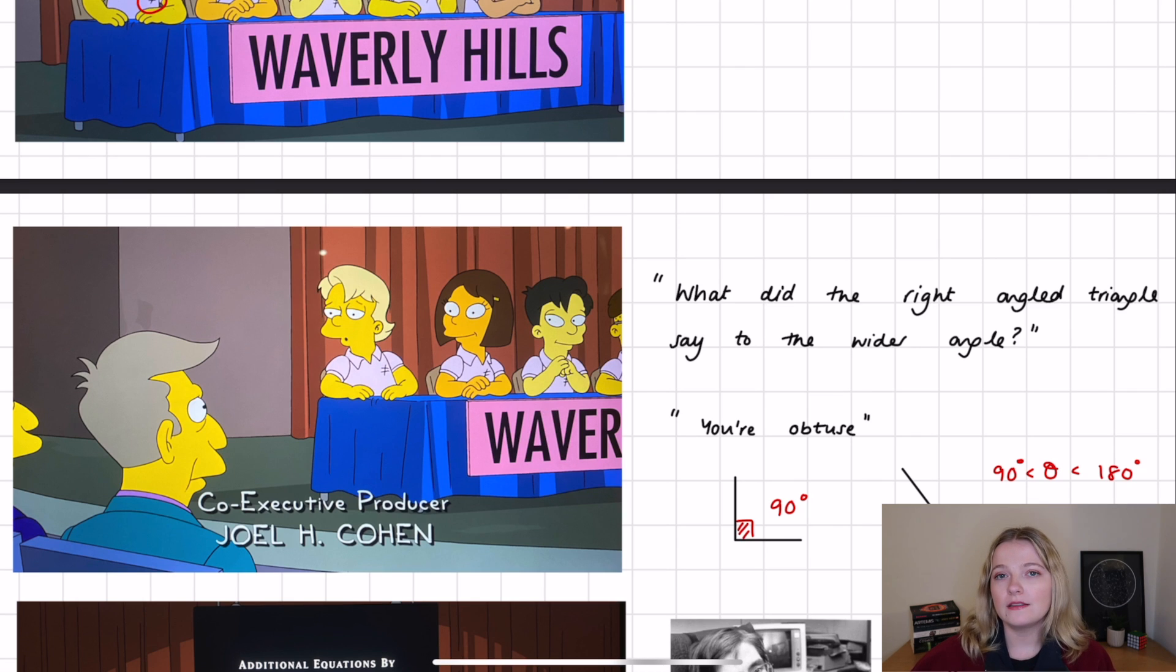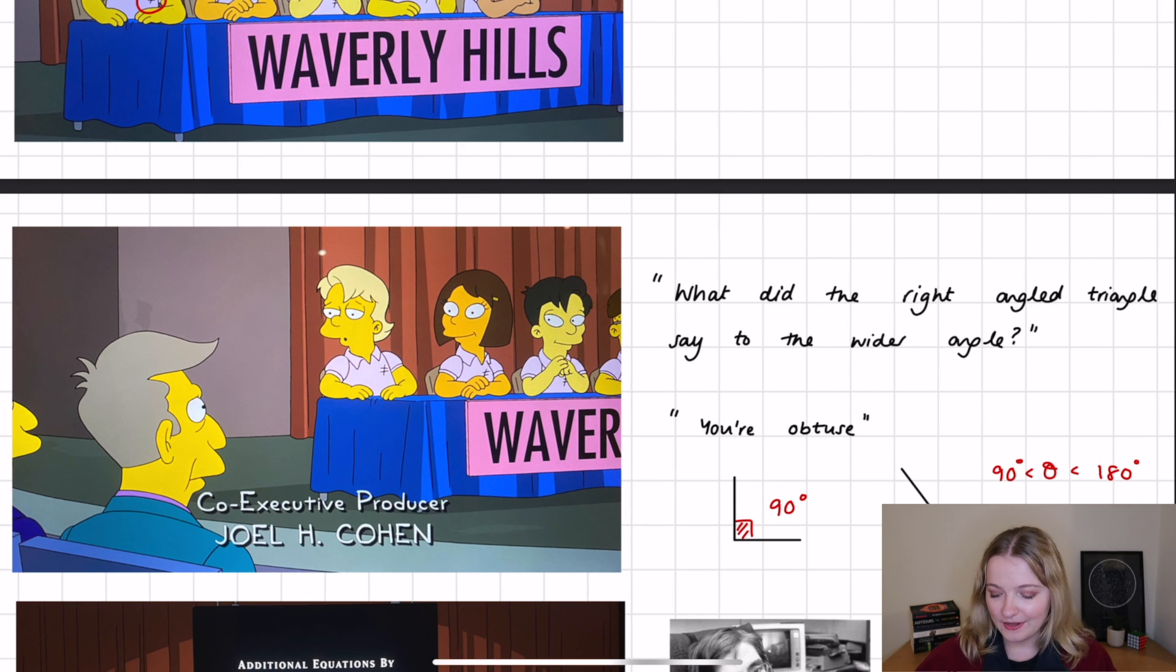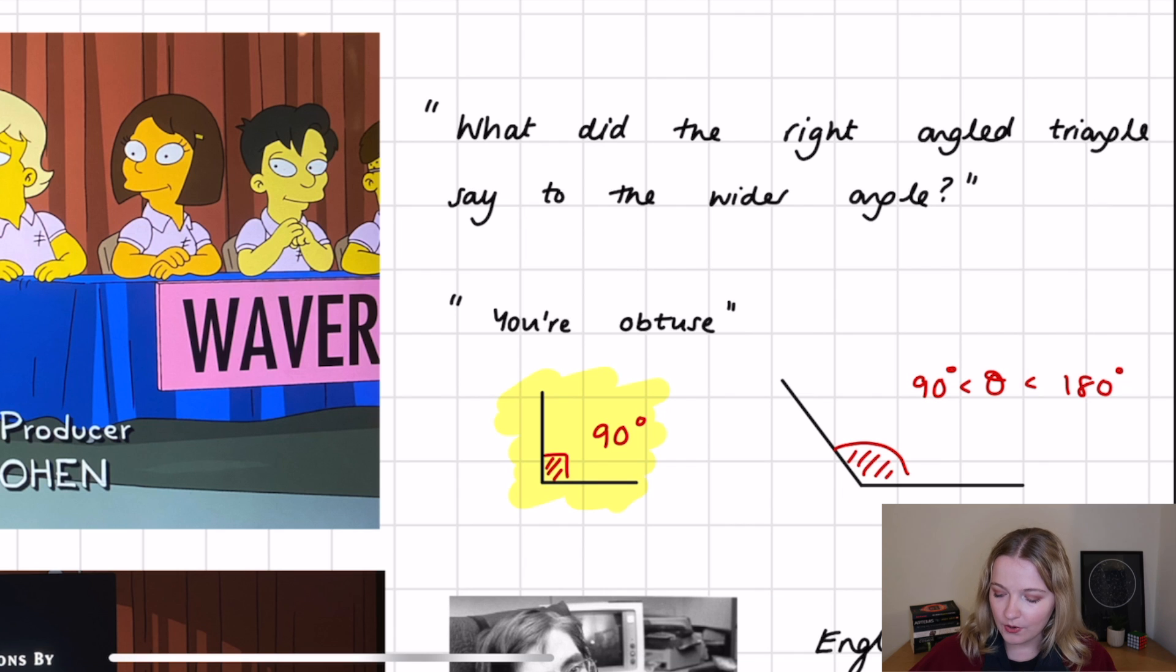Then when the Waverley Hills Mathlete team is getting introduced, the end member says, what did the right angle triangle say to the wider angle? And then they go on to say, you're obtuse. And the reason that is, this is because a right angle triangle, as I've illustrated at the bottom here, that's what a right angle triangle looks like. But a wider angle, which is given by this here, is said to be obtuse if the angle is greater than 90 degrees or less than 180. So essentially, the 90 degree angle is saying to the wider angle, you're obtuse. And that's because the definition of a wider angle can be obtuse.